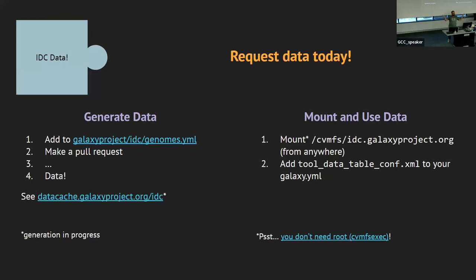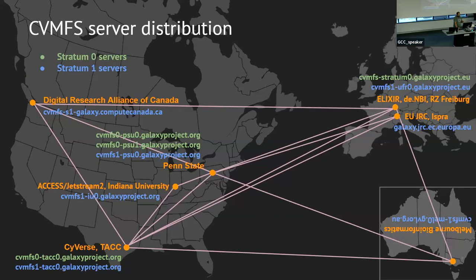We've put all of these pieces together. You can request data today. You go to the repository, make a pull request, and eventually it will end up in a repository that you can mount on your Galaxy server — you don't even need root on your cluster. It's distributed around the world through all of these different sites, and you can set up your own Stratum 1 mirror if you want.